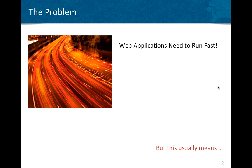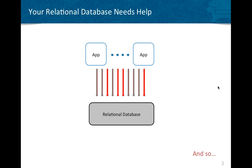Web applications need to run fast. Whenever I meet web developers who have just finished an application or are starting a new one, a question that comes up over and over again is: how do I make my web application run fast? The site doesn't run fast, or is too slow. Many times this means your relational database needs help. You can see that the application tier sends a bunch of requests to the relational database tier in the back end, and the database can get overwhelmed with too many requests.